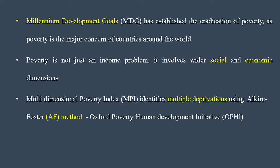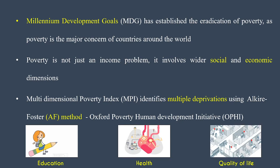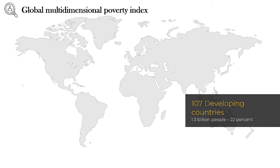Hence, the Multi-dimensional Poverty Index has been used nowadays. It was developed using the Alkire-Foster method and was jointly framed by the Oxford Poverty and Human Development Initiative. It accounts for multiple deprivations across three dimensions: education, health, and quality of life, all of which are included in estimating the index.